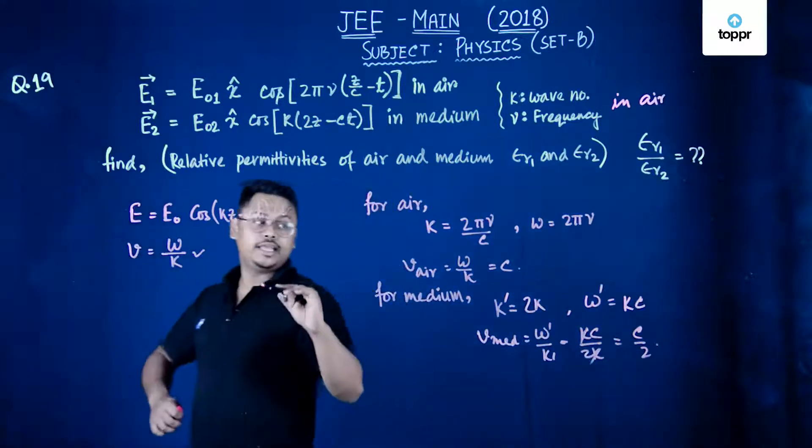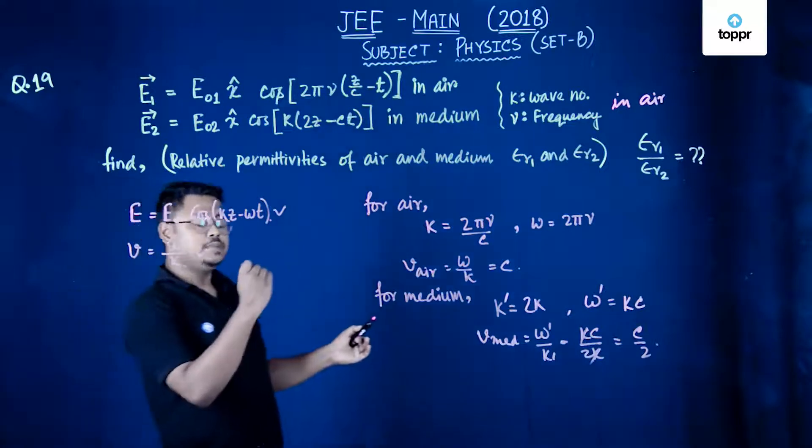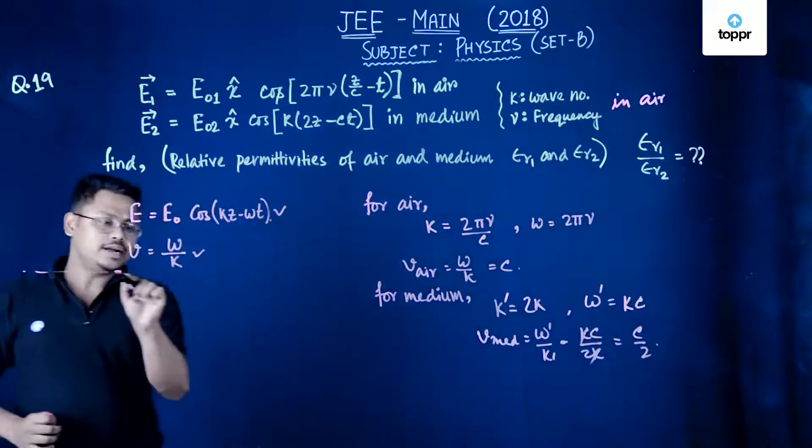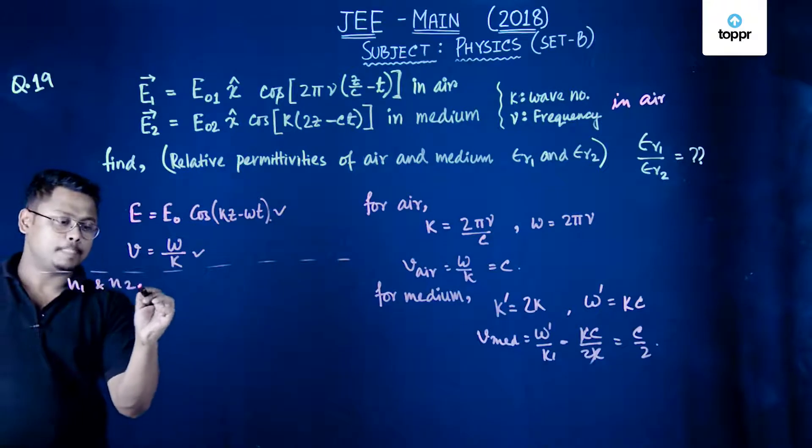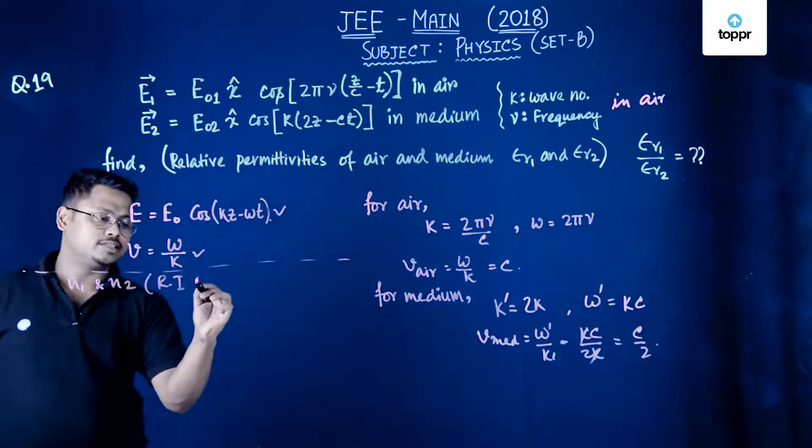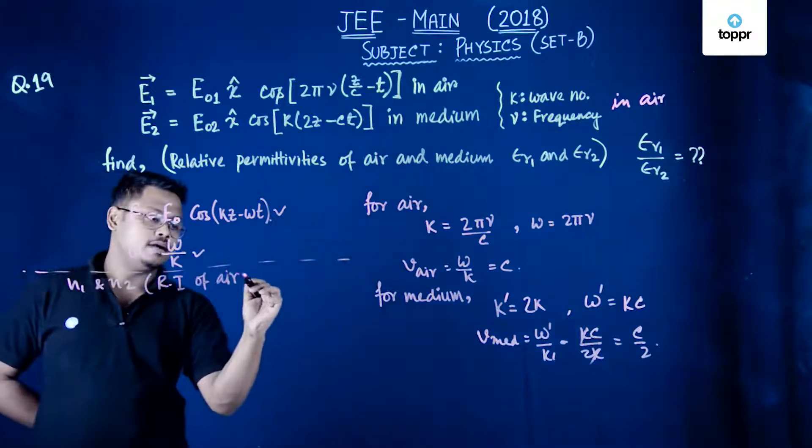So you got the velocity in air as well as velocity in medium. Now let us assume that n1 and n2, n1 and n2 refractive index of air and medium.